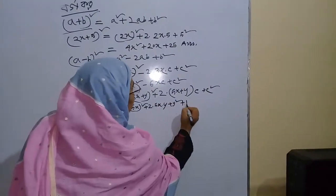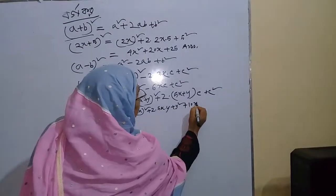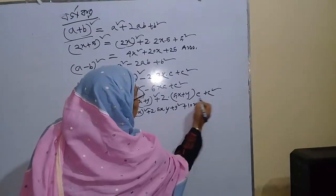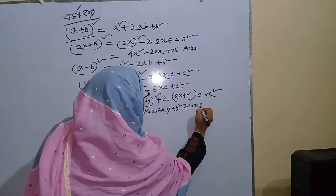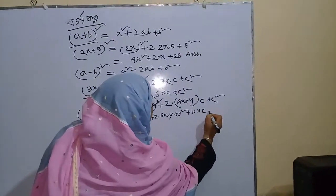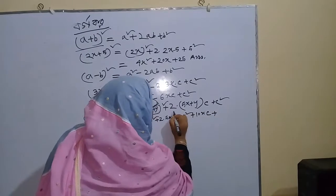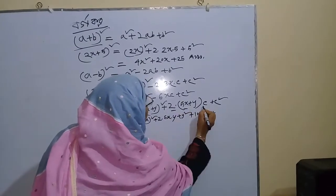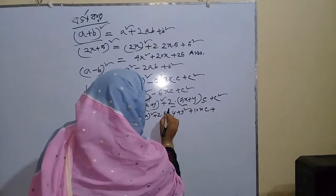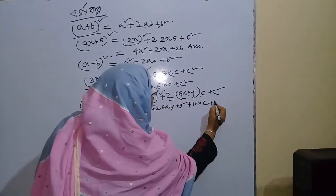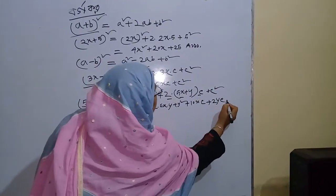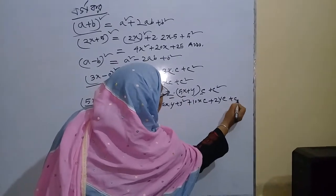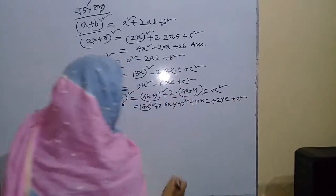1, 2, 2, C, plus B, B, plus 1, C squared.